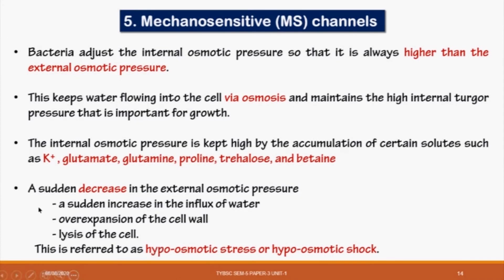We understood that whenever there is a hypo-osmotic stress or a hyper-osmotic stress, the cell does some modification with Aquaporin. Similarly, the cell can also do some modification with the internal solute. Bacteria adjust their internal osmotic pressure. They always try to keep the internal osmotic pressure high as compared to the external environment.